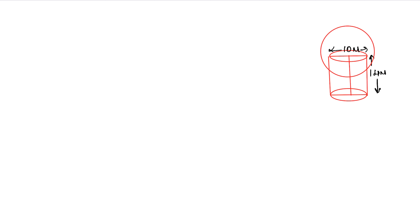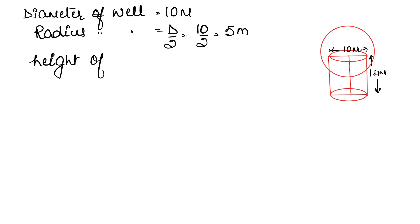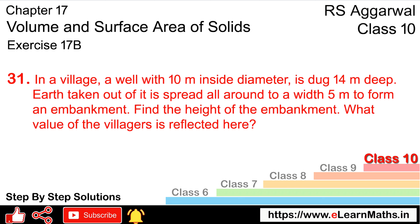The diameter of the well is 10 meters, so the radius of the well is diameter divided by 2, that is 10 divided by 2 = 5 meters. The height of the well is 14 meters. Also given is the width of the embankment, which is 5 meters.